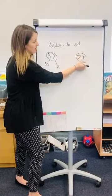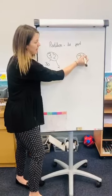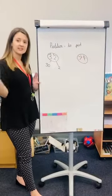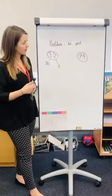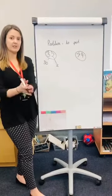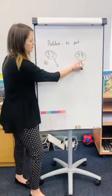So 79 is my whole. And again, I'm going to partition it into tens and ones. So I'm going to go: 70 is a part, 9 is a part, 79 is my whole.